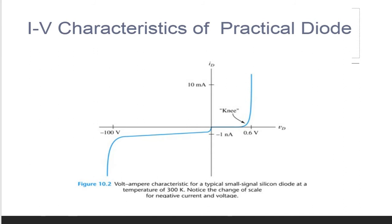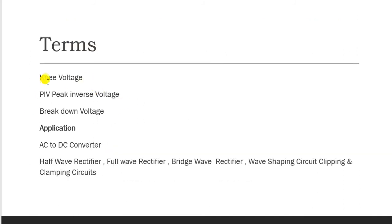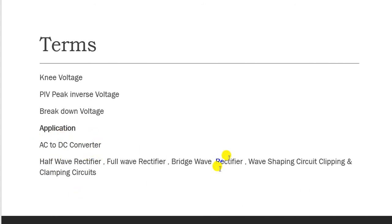Key parameters of a diode include the knee voltage, and PIV (Peak Inverse Voltage) — the maximum reverse voltage that can be applied without breakdown. The breakdown voltage is the reverse bias voltage at which a large reverse current flows suddenly. The main application of a rectifying diode is as a rectifier — an AC-to-DC converter. There are three types: half-wave, full-wave, and bridge rectifiers. Diodes are also used in wave shaping circuits, clipping, and clamping circuits.